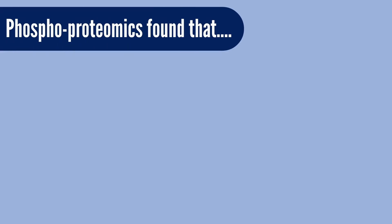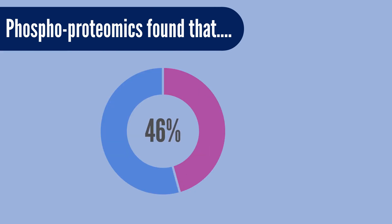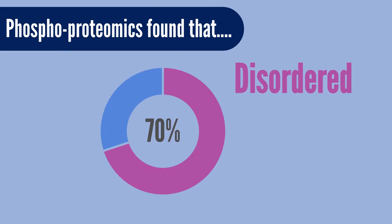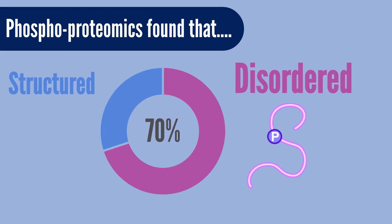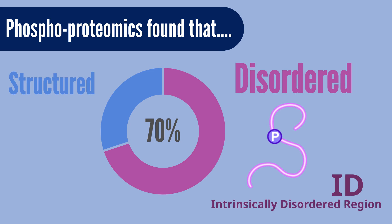However, studies on phosphoproteomics demonstrated that more than 70% of phosphorylation occurs in the region without any three-dimensional structures, which is the so-called intrinsically disordered region, or IDR.